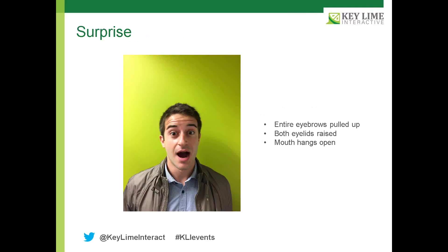The second facial expression that we are going to talk about is surprise. Both of his eyebrows are pulled up and raised, there's a wrinkling of the forehead, both eyelids are also raised, and the mouth is hanging open. In a user research context, when someone becomes surprised, it's usually because they've encountered something they didn't expect to see. Sometimes a user will click a continue button and get to subsequent content they weren't expecting to see and get caught off guard. As a UX researcher, it's important to note when a user becomes surprised, because there's more work that needs to be done to give users a better inclination of what to expect when making a certain action like clicking a continue button.